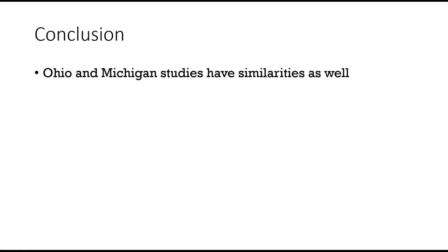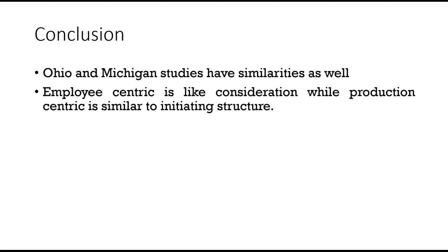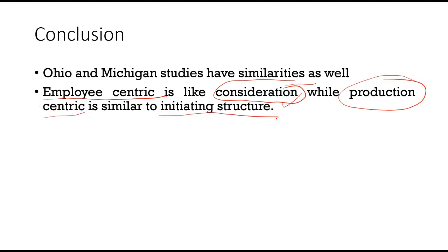Now, the overall conclusion: Ohio and Michigan studies had quite a few similarities. The first similarity was that both created two categories. Both were studying behavioral patterns — Ohio researchers did the same as Michigan researchers. Employee-centric was very similar to Ohio's consideration, and production-centric was very similar to Ohio's initiating structure. So both studies were broadly on similar grounds.